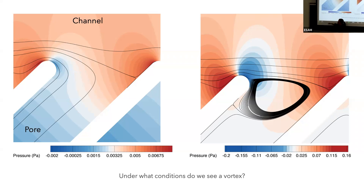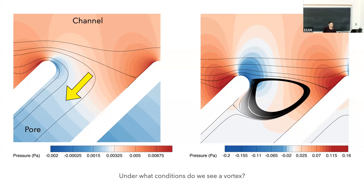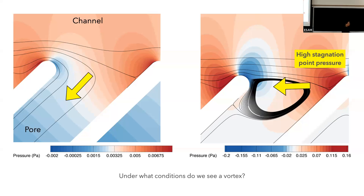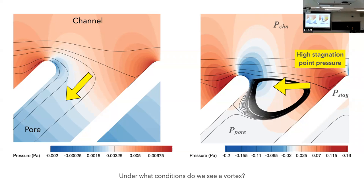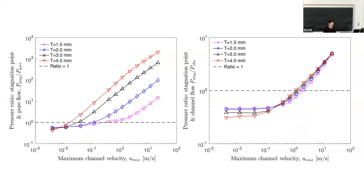My problem has become: under what conditions do I get a high stagnation point pressure in this geometry? We plotted the ratio of stagnation pressure to pore pressure on one axis, and the ratio of stagnation pressure to channel pressure on the other. I expect to see the vortex where stagnation pressure is high. Down in one region, the pore pressure dominates and everything works - that's where I have nice flow down the pore. Over in another region, the stagnation pressure dominates everything - channel pressure, pore pressure - and that's where I expect to see the vortex, with some kind of transition in between.